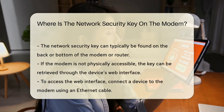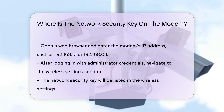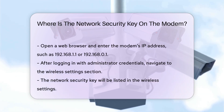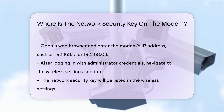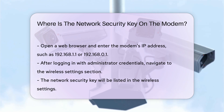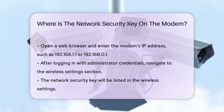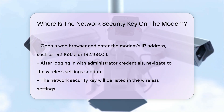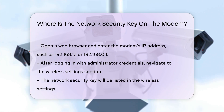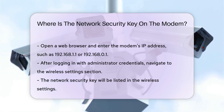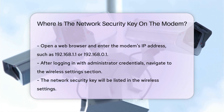Common IP addresses include 192.168.1.1 or 192.168.1.0. After logging in with the administrator credentials, navigate to the Wireless Settings section. Here, you should find the network security key listed.